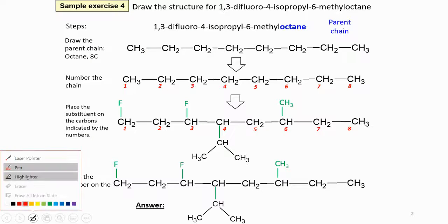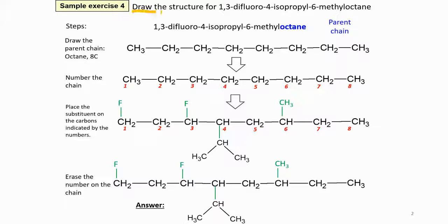Now let's look at how to draw the structure. First of all, we always look for the parent chain first. So the parent chain is octane. So you draw the parent chain octane. Octane is 8 carbon.